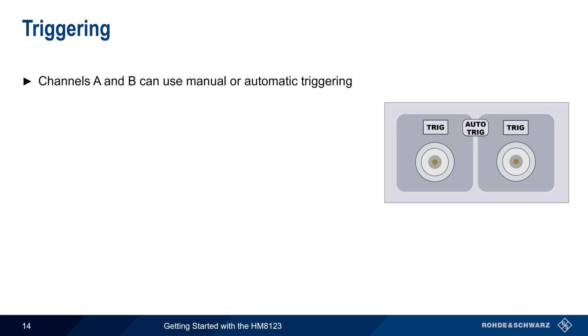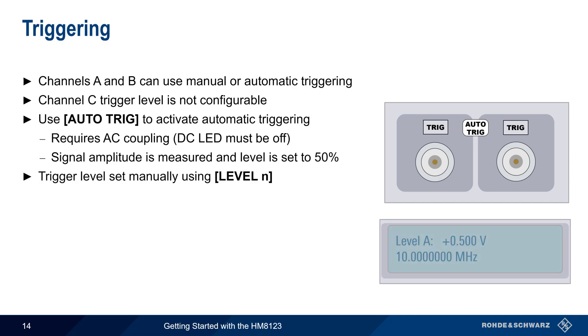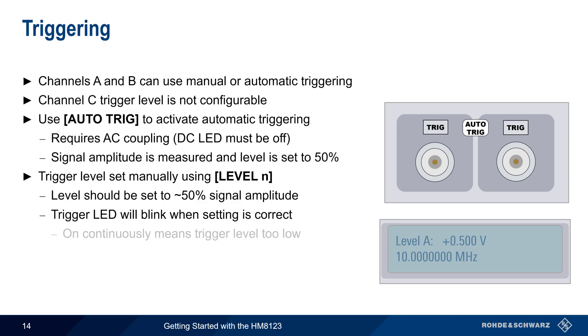Next, let's look at triggering. Channels A and B can use either manual or automatic triggering. The channel C trigger level is not user configurable. To enable automatic triggering, press the Auto Trigger button. Note that this mode requires AC coupling. That is, the DC LED must be off. In automatic mode, the signal amplitude is measured and the trigger level is then set to 50% of this value. To manually set the trigger value, use the level keys mentioned previously. Ideally, the trigger level should be set to about 50% of the signal amplitude. If the level is set correctly, the trigger LED will blink. If the trigger LED is on continuously, this means the trigger level has been set too low. And if it's off continuously, then the trigger level has been set too high.